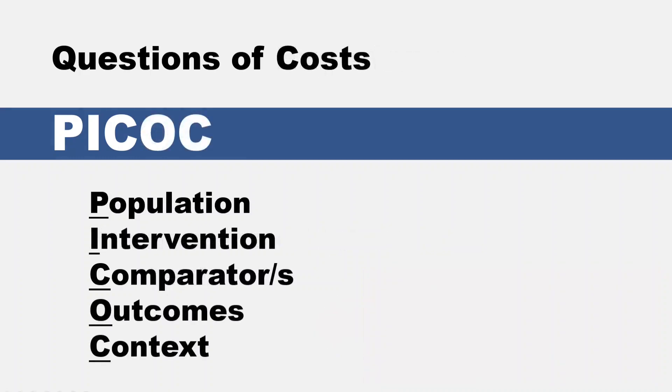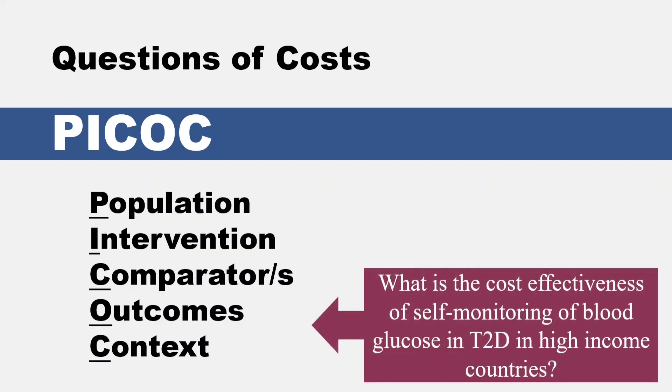The next question is for questions of costs or economics. PEACOCK: population, intervention, comparator or comparators, outcomes, and context. A sample topic might look like this: 'What is the cost effectiveness of self-monitoring of blood glucose in type 2 diabetes in high-income countries?'